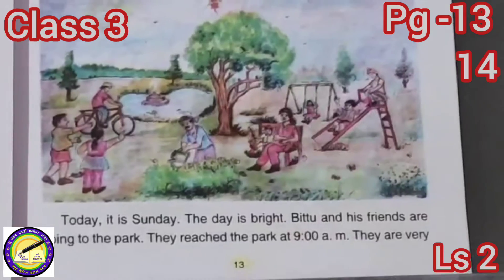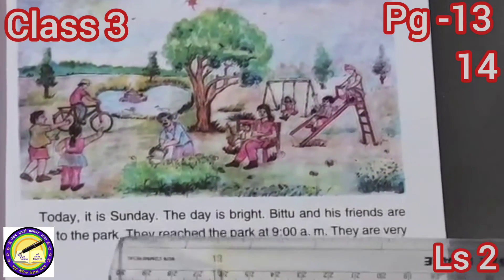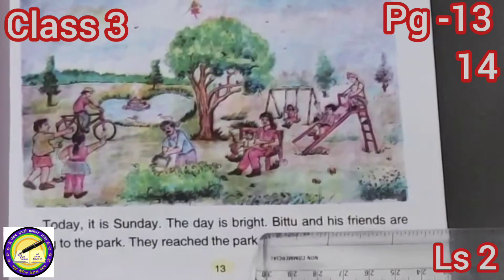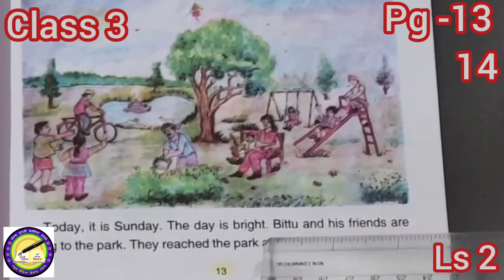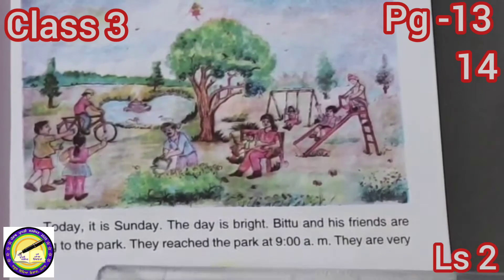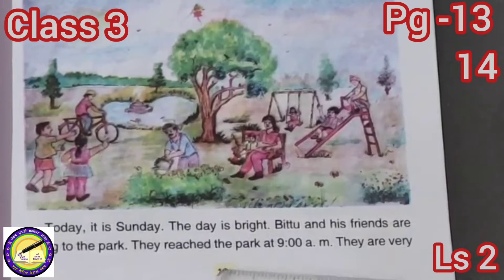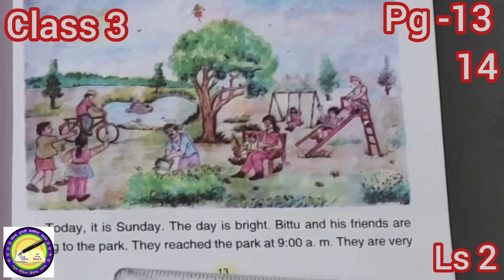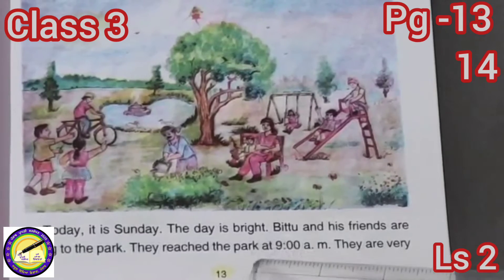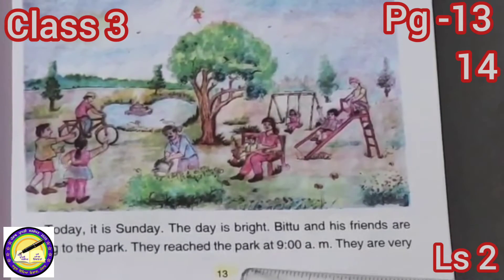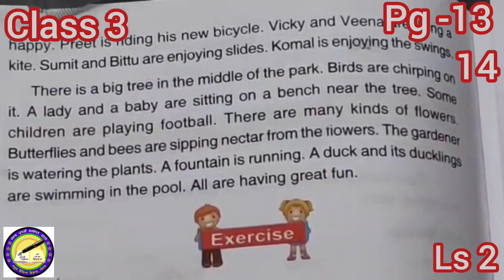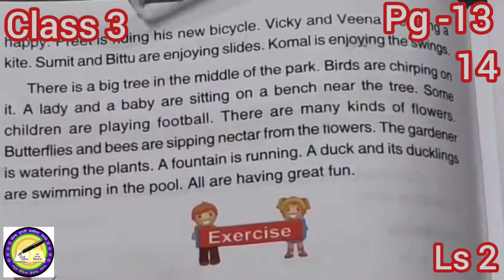Today it is Sunday — aaj Aitwar hai. The day is bright — din chamakdar hai. Bittu and his friends are going to the park — Bittu ate uske dost paak ja rahe han. They reached the park at 9 a.m. — o savere 9 vajhe paak pohunch gaye. They are very happy — o khush han.